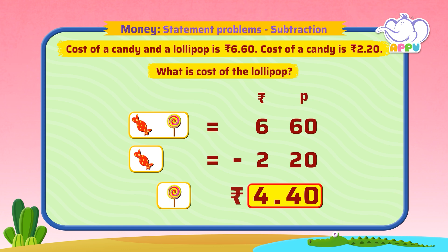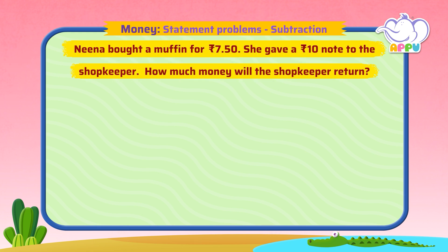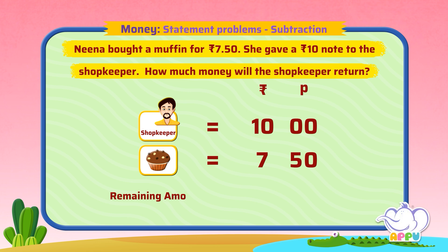How smart! Neena bought a muffin for 7 rupees 50 paise. She gave a 10 rupees note to the shopkeeper. How much money will the shopkeeper return?